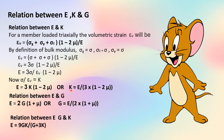Writing it as K: K equals E divided by 3·(1 minus 2mu). The relation between E and G (proof not required) is E equals 2G·(1 plus mu). Writing it as G: G equals E divided by 2·(1 plus mu).